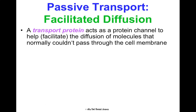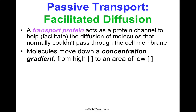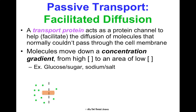Facilitated diffusion is similar but requires a transport protein acting as a channel to help molecules that normally couldn't pass through the cell membrane. Some molecules are too big or too polar — like glucose (a large sugar) or sodium (a charged ion) — so they go through a protein channel. They're still moving down the gradient from high to low concentration and still require no energy, but they need that extra channel to get through.